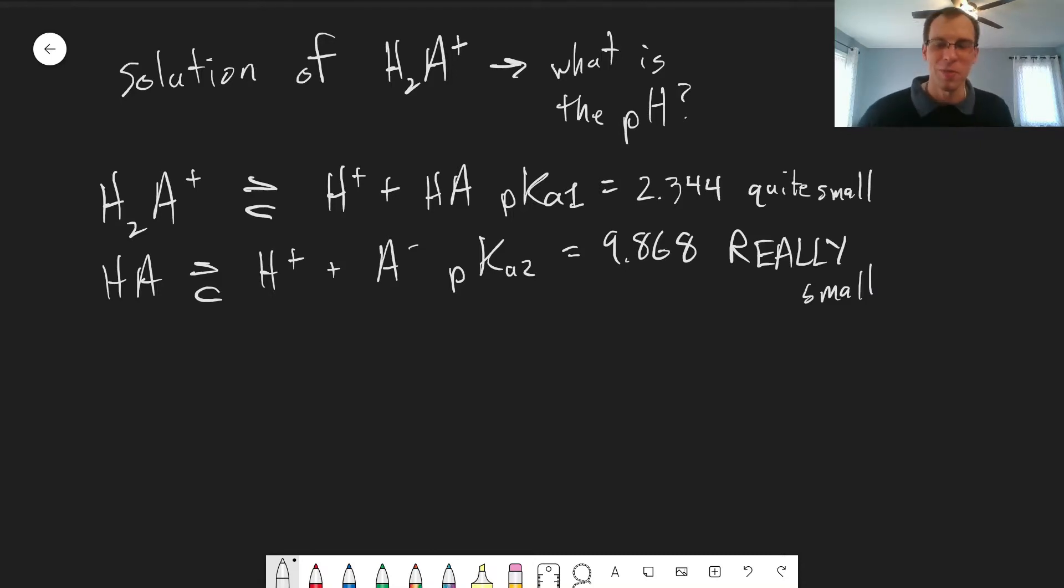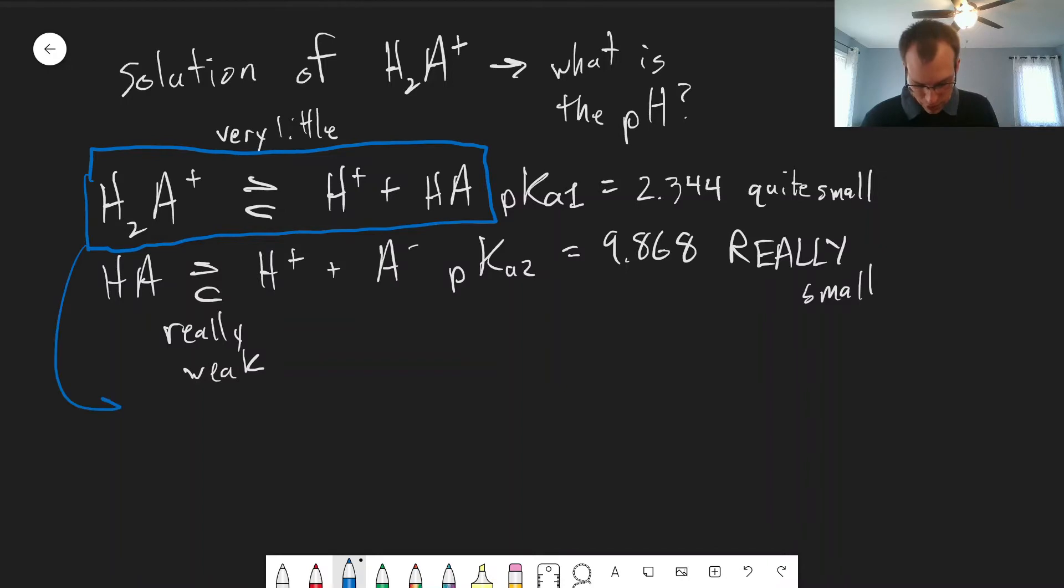What that means in terms of what's happening with the equilibria is that we only get a very little dissociation here because this is a weak acid, just like what we saw with acetic acid when we're doing the vinegar calculation or other things like that, which means that this is a really weak acid. And we're not going to see a significant amount of dissociation of the HA into H plus and A minus. Long story short, what that means is that this equilibrium is our primary source of H plus, and we only need to worry about this one.